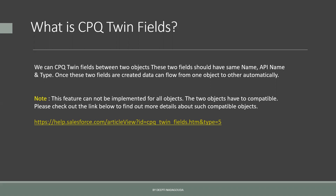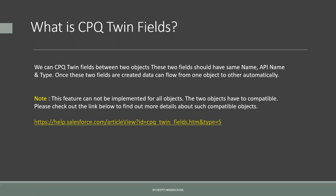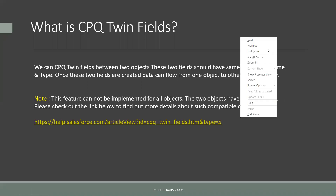Whenever you decide to create a twin field between two objects, you have to go to a particular link and check whether the two objects you have selected are listed or not, or whether these two objects are compatible or not. Once you know that these two objects are compatible, then you can go to the next step.